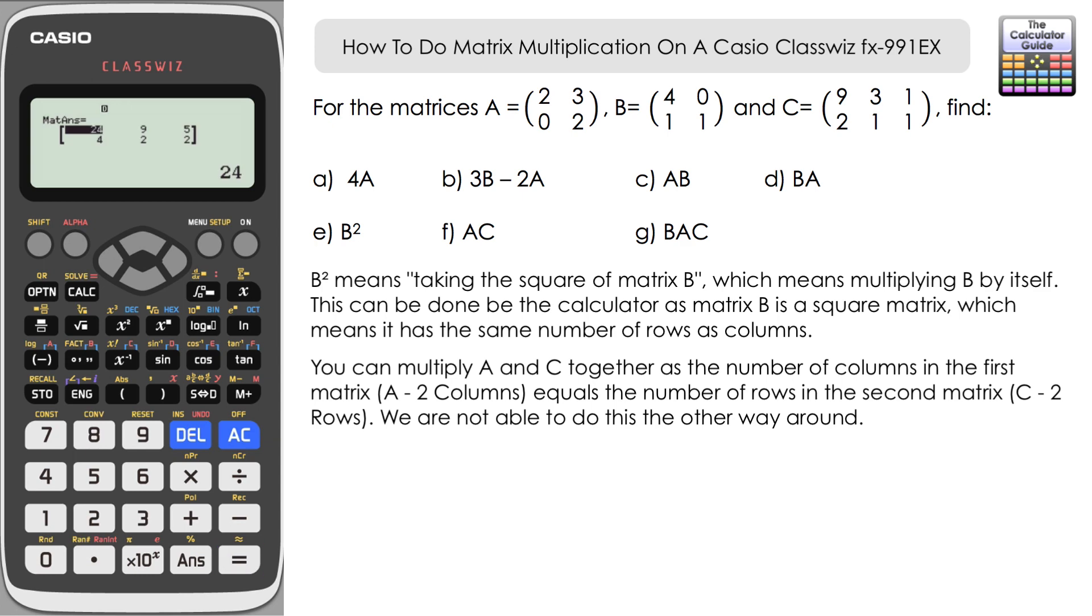Now just to show you, you can't do it the other way around because the number of columns in matrix C, which is 3, doesn't match the number of rows in matrix A. And if you try and do that on the calculator, then you should get a dimension error. So let's just try that.